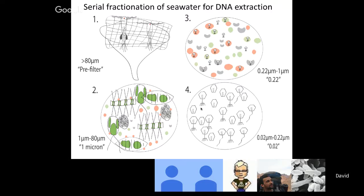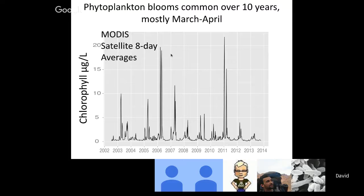Phytoplankton blooms are common over the 10 years and mostly occur in March and April. Here's MODIS satellite imagery — a composite of eight-day averages from 2002 to 2014. In general chlorophyll is low, probably less than a microgram per liter, but there are really sharp spikes where chlorophyll increases rapidly, probably over just a few days. These are really important to export and understanding flows of carbon. Unfortunately, because they're so ephemeral, we hadn't been able to measure any of these with our monthly sampling. But as it turned out, one of the daily samplings we performed occurred on one of the largest phytoplankton blooms we had seen at SPOT over almost 20 years of study.